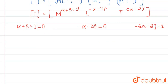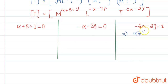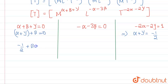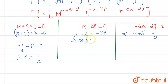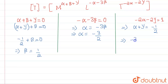Solving these equations: from the T equation, alpha + gamma = minus 1/2. Substituting into the M equation gives beta = 1/2. From the L equation, minus alpha minus 3 beta = 0, so alpha = minus 3 beta = minus 3/2. Finally, gamma = minus 1/2 minus alpha = minus 1/2 minus (minus 3/2) = 1/2.